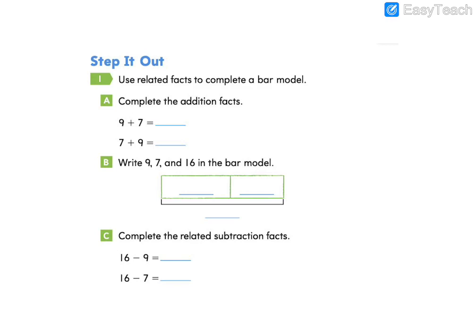We're going to go to the next page and look at Step It Out. The first question says, use related facts to complete a bar model. Complete the addition facts. The first question we need to solve is nine plus seven. What are some ways we can find the sum of nine and seven? We could count on. We could draw a representation. But go ahead and solve for nine plus seven.